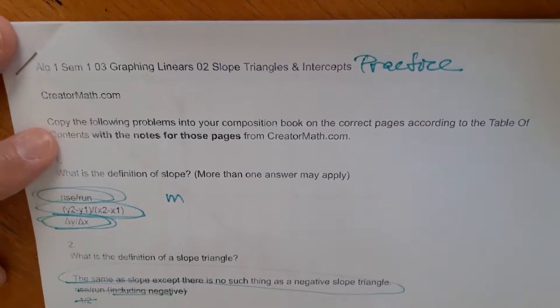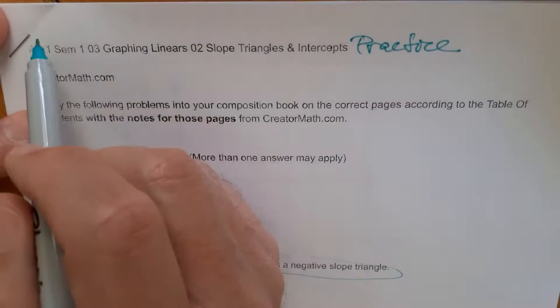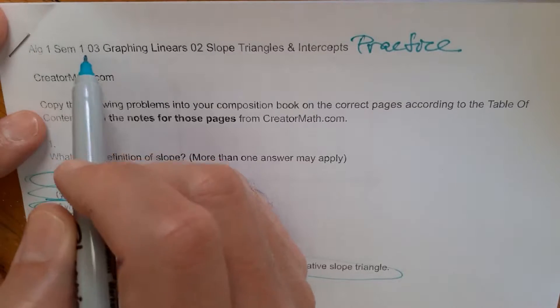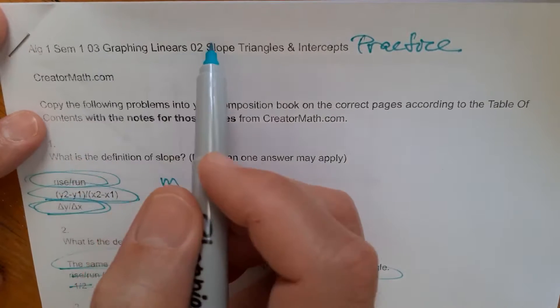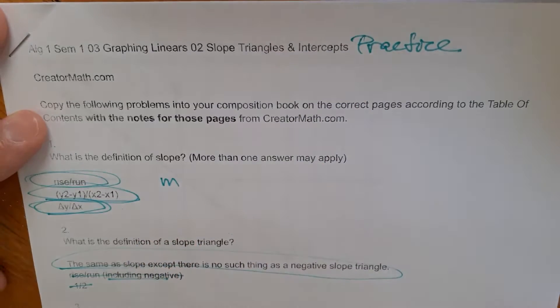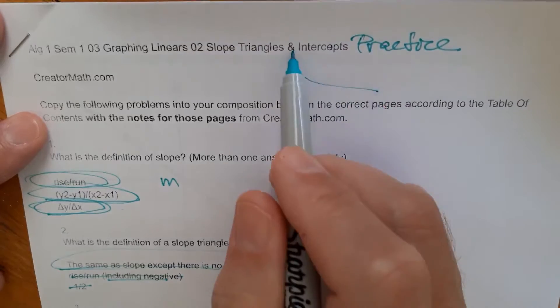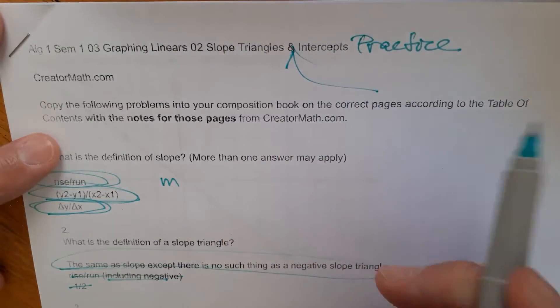The title of this video with the title of the practice set you're doing. Otherwise, it won't make much sense. This is Algebra 1, Semester 1. It's the third unit called Graphing Linears. And the second lesson called Slope, Triangles, Intercepts, Practice. Slope, Triangles, N, Intercepts, Practice. So hope that helps.